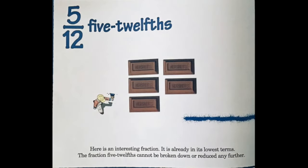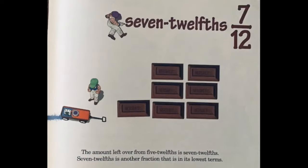Here is an interesting fraction — it is already in its lowest terms. The fraction five twelfths cannot be broken down or reduced any further. The amount left over from five twelfths is seven twelfths, which is also a fraction that is already in its lowest terms.